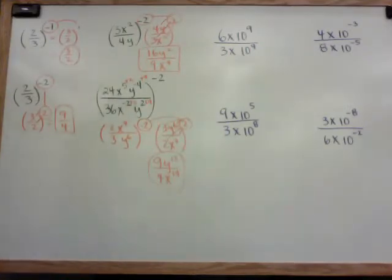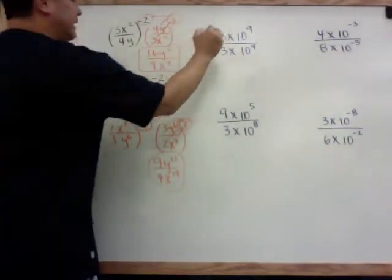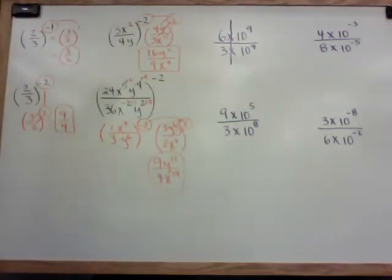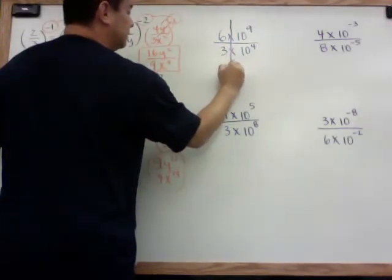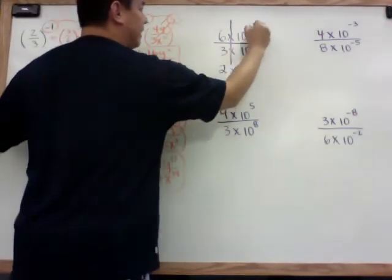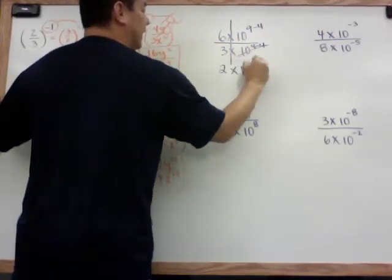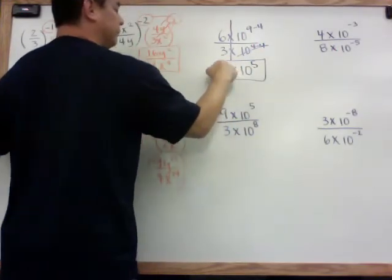The last example is division in scientific notation. The easiest thing to do is split it down, then think of it as two fractions. So 6 divided by 3 is 2. Then for the powers of 10: I have 9 on the top, 4 on the bottom, I'm going to minus 4 from both and I get 10 to the 5th power. And there's your answer: 2 times 10 to the 5th power.